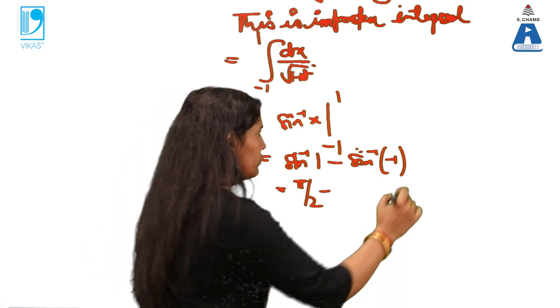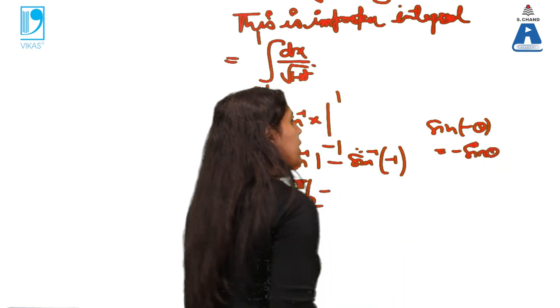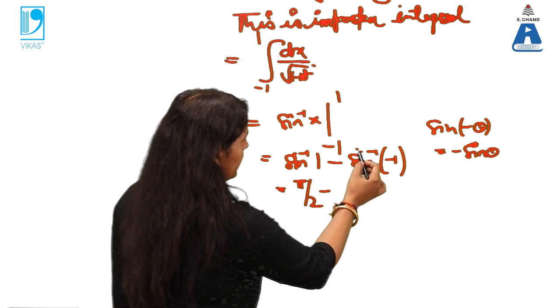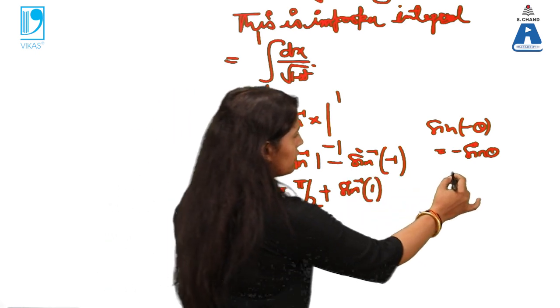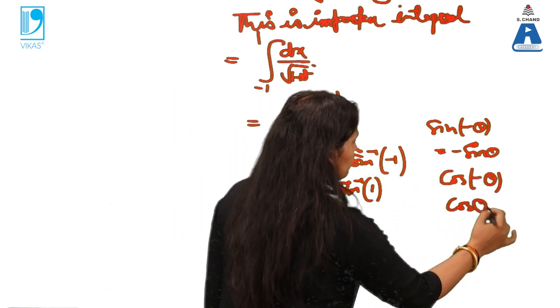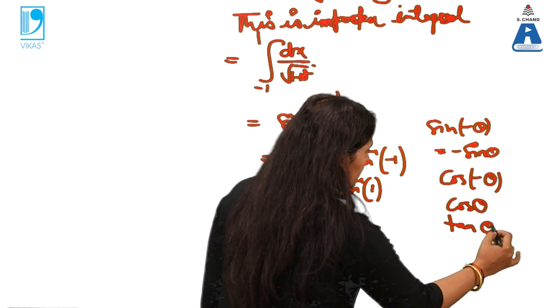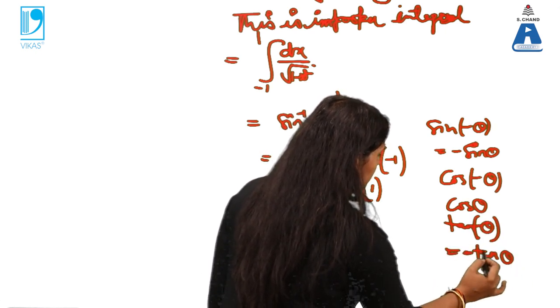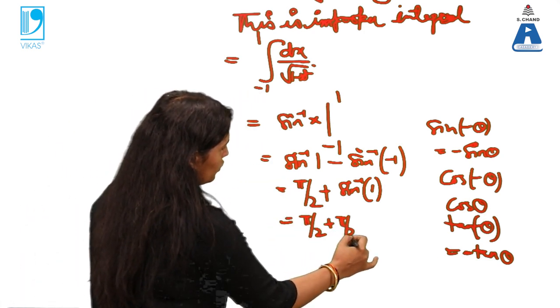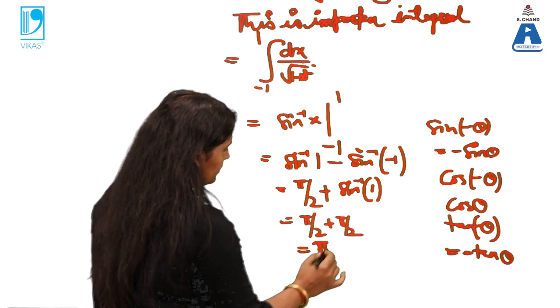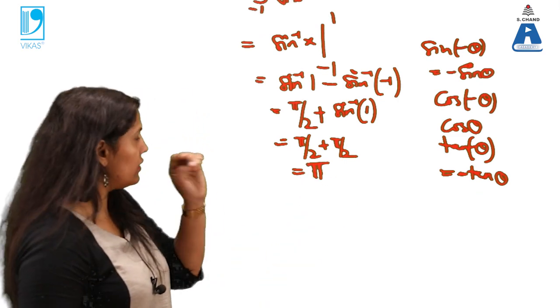We know that sin of minus theta is minus sin theta. It means the negative angle negative comes in the beginning. So this becomes plus sin inverse 1 and for cos theta it is not just the same, it is positive angle only. So cos of minus theta value and cos theta both are same. For tan theta again the same rule as sin has sin function. So π by 2 plus π by 2 it is π. So you can see it is again convergent case and the integral was improper.